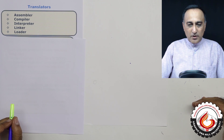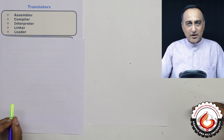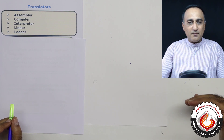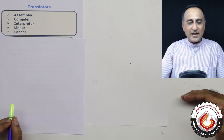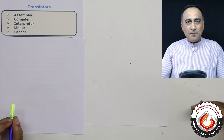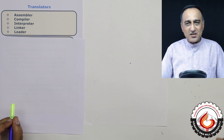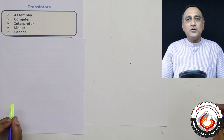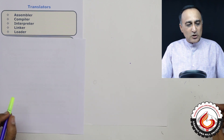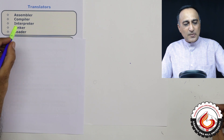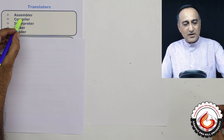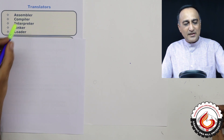Now, in order to convert the code written in assembly to machine level language, and the code written in high level language to machine level language or assembly language, we use various softwares. So this session is going to be about those particular softwares. In the first part, I'm going to discuss the assembler, compiler, and the interpreter.